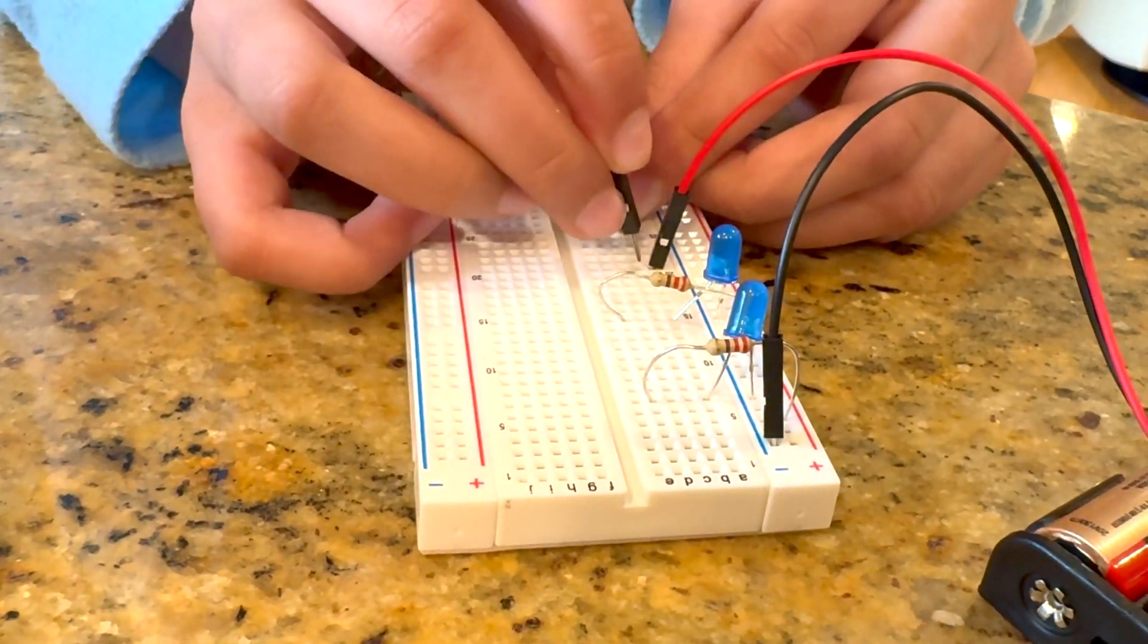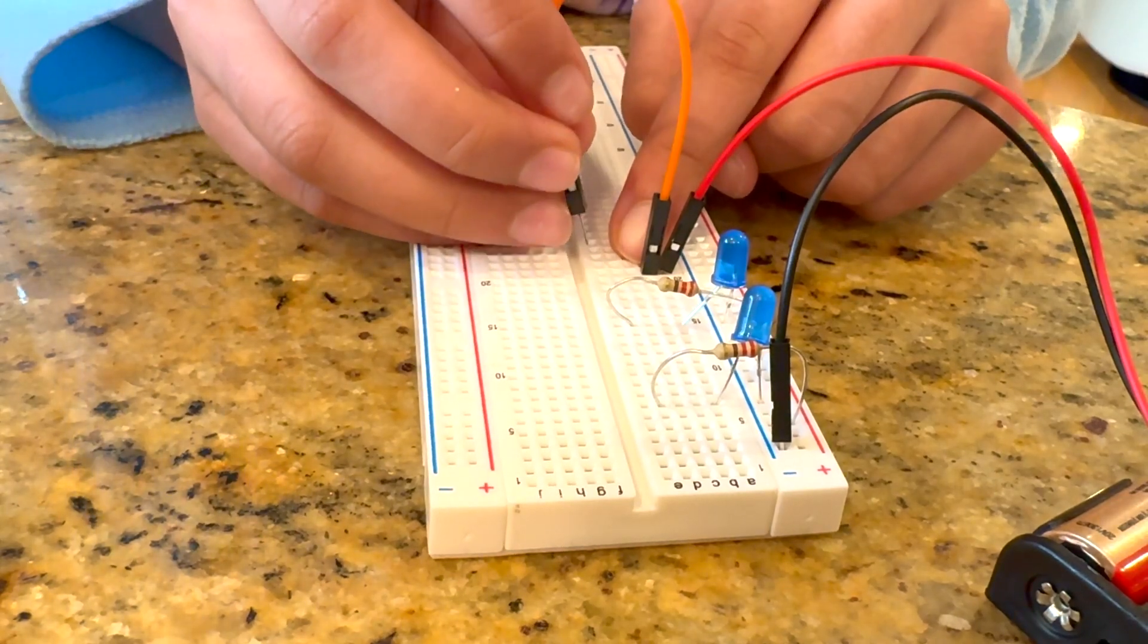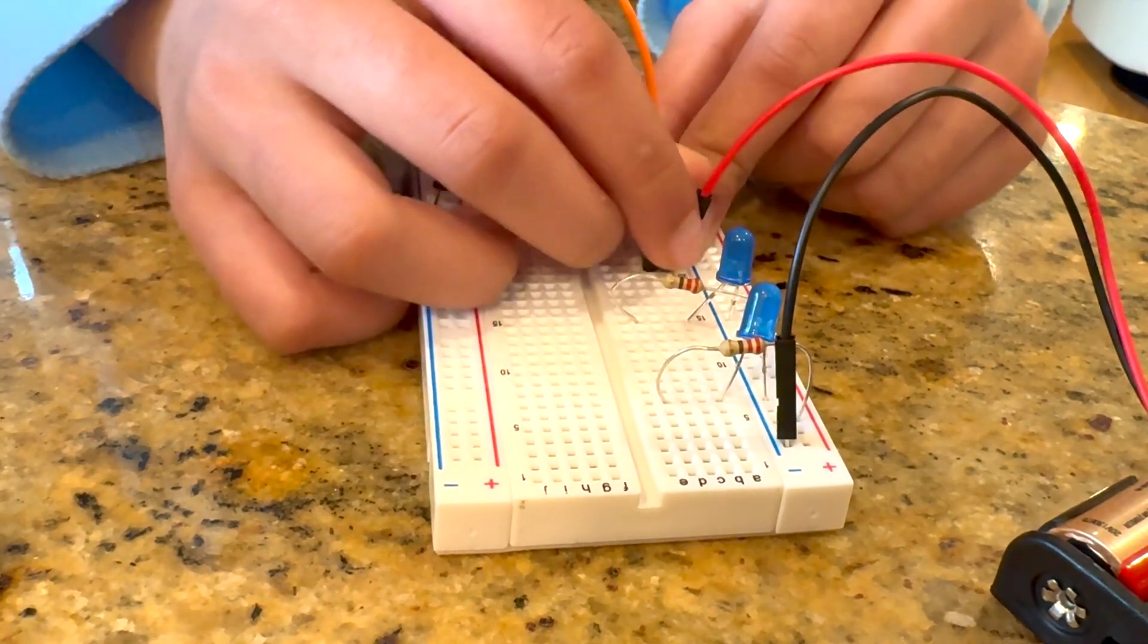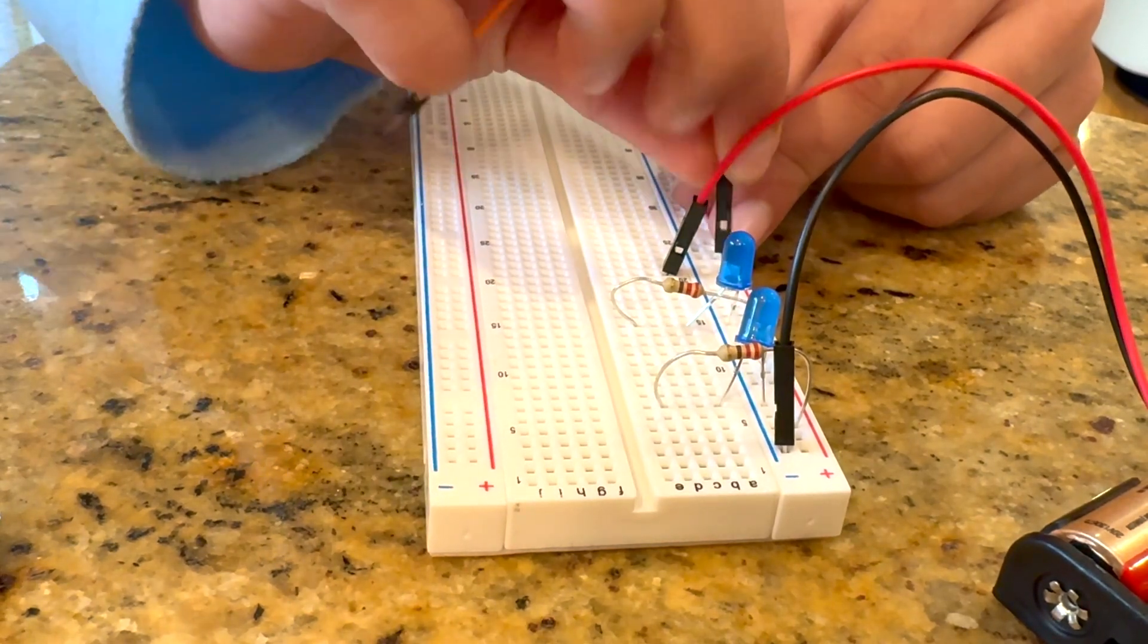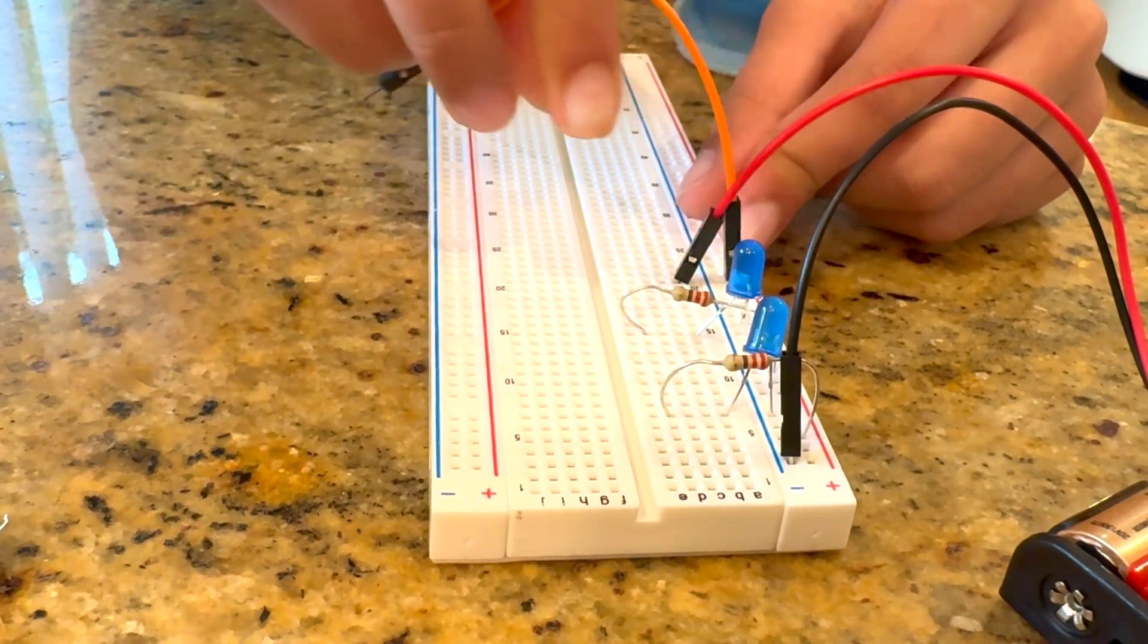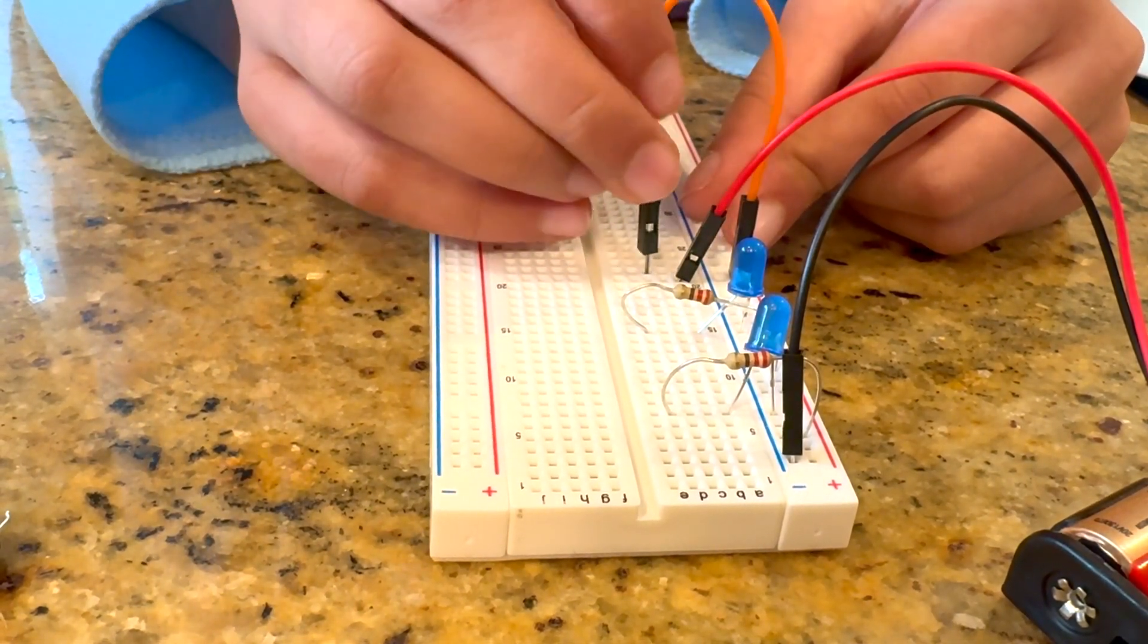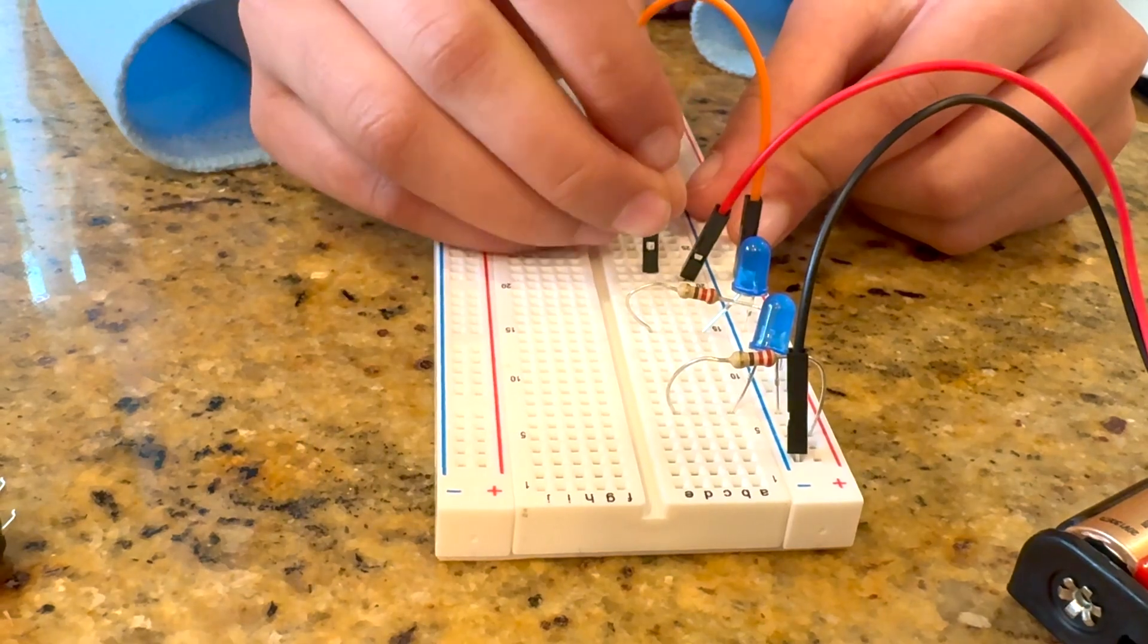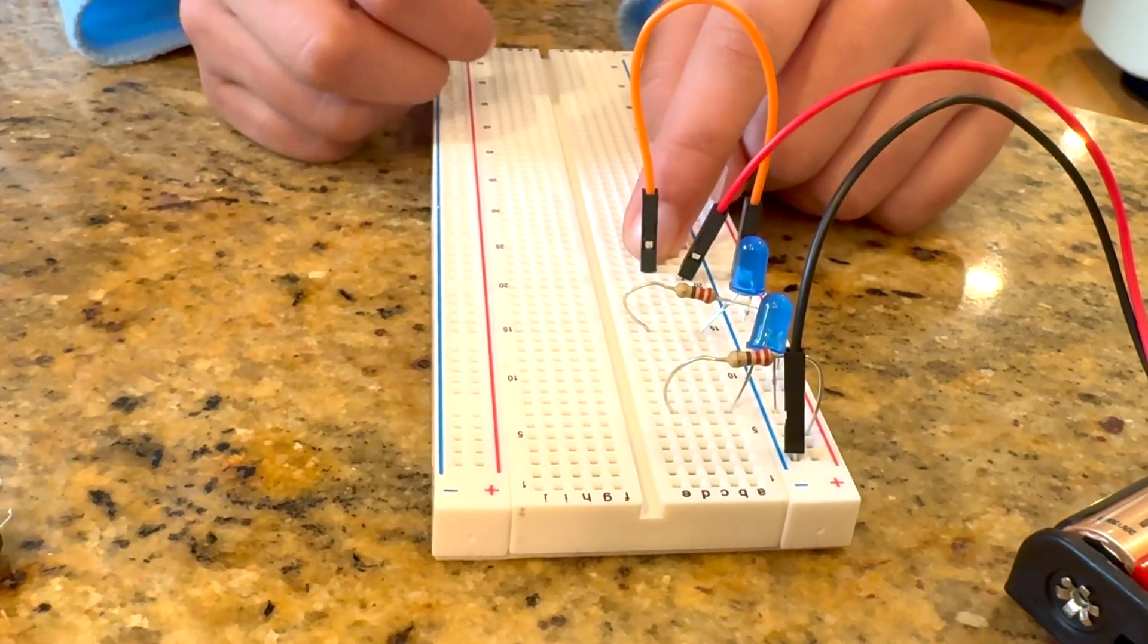Wait, I take my jumper wire, connect it at B21. Oh, wait, sorry. Take the jumper wire, connect it at P121, and put it at D22.